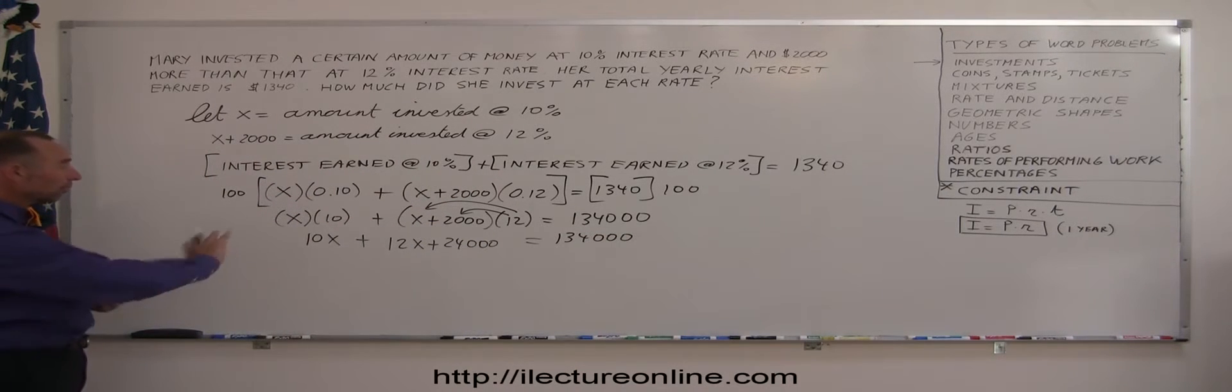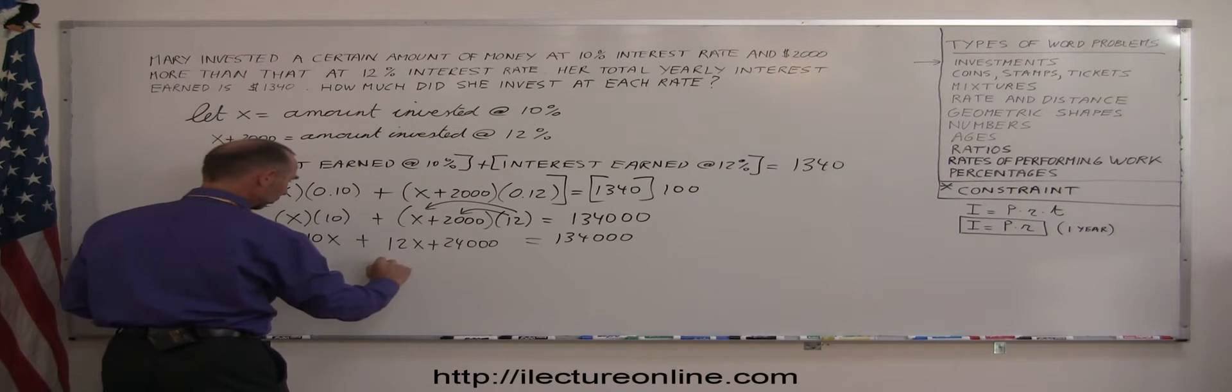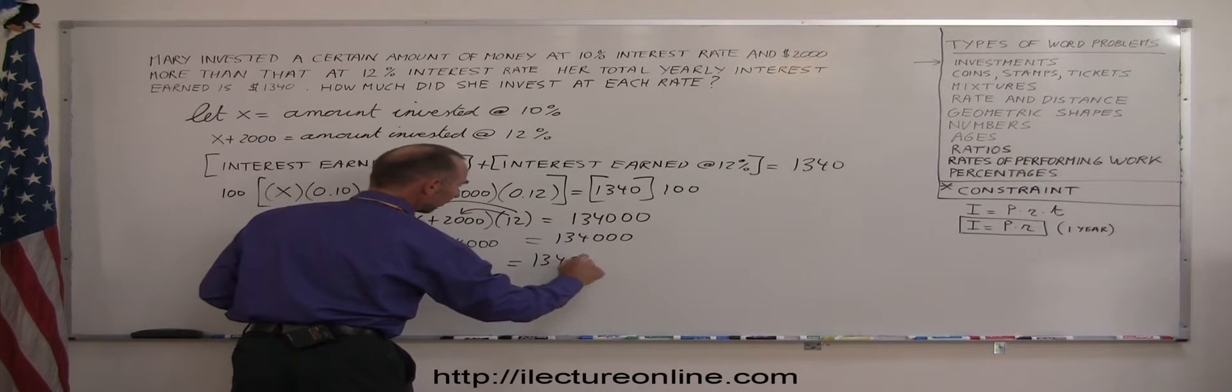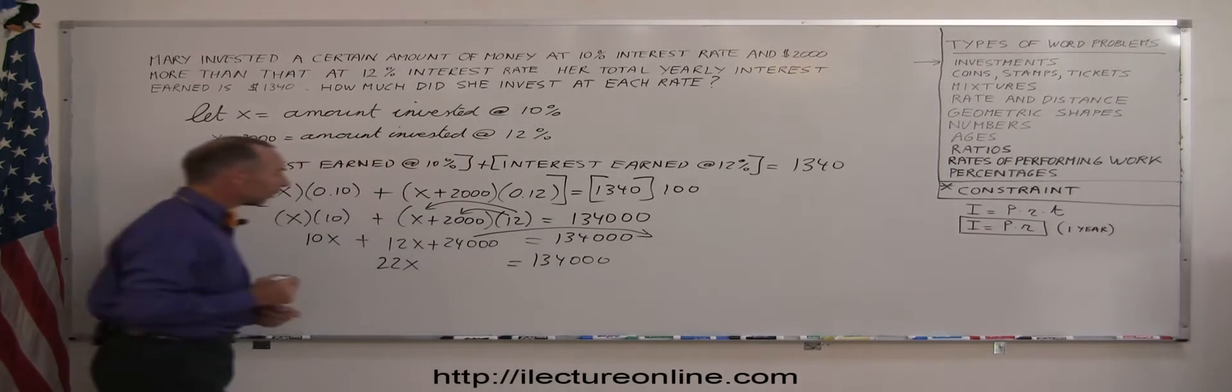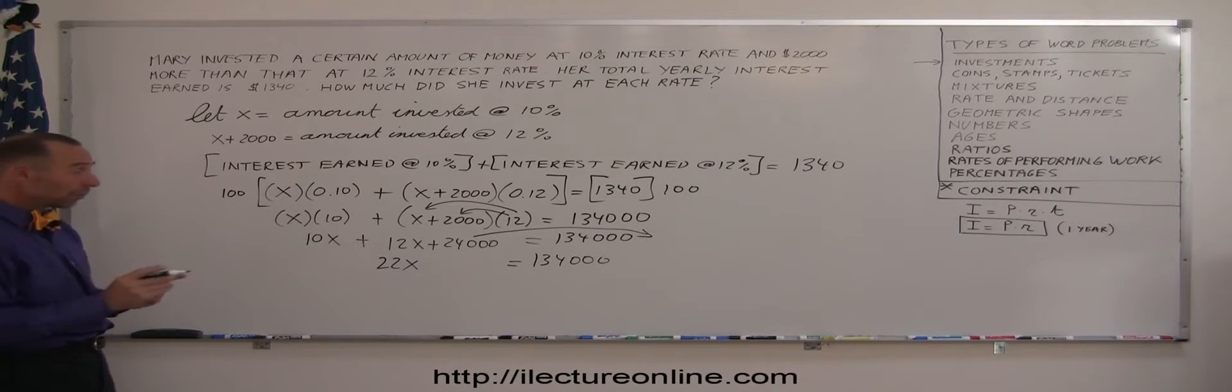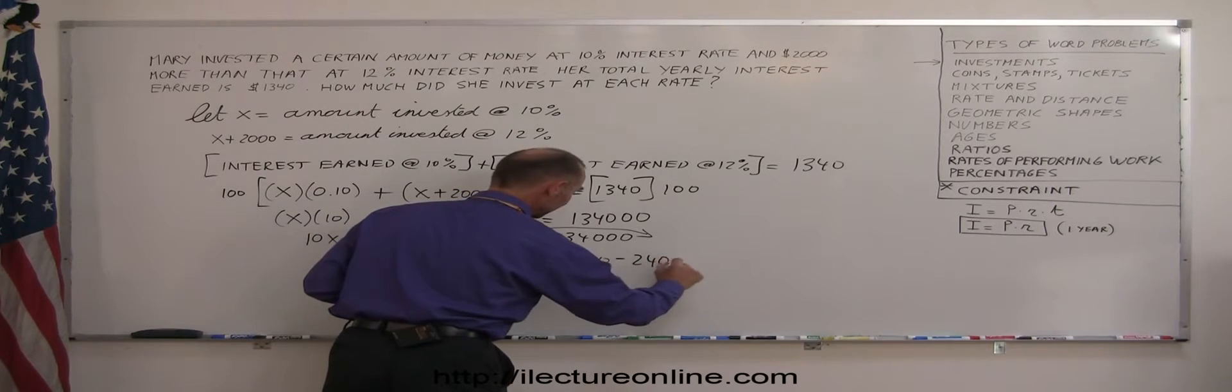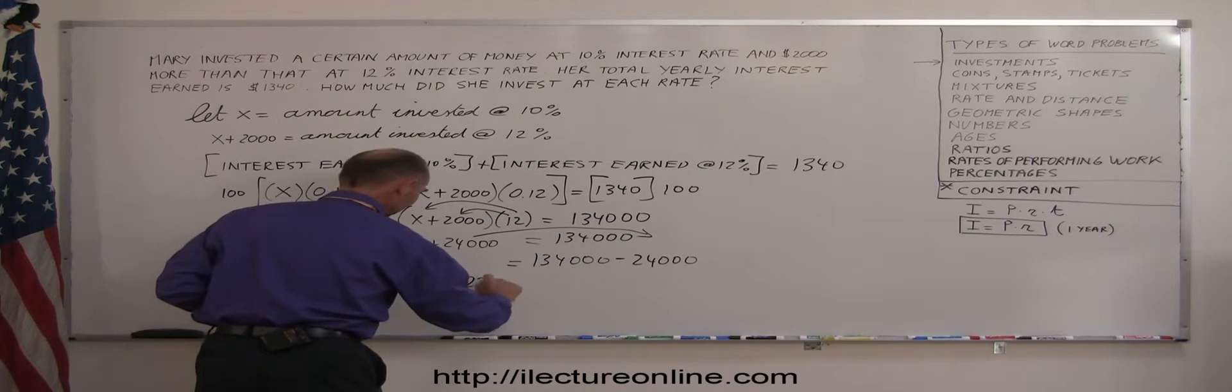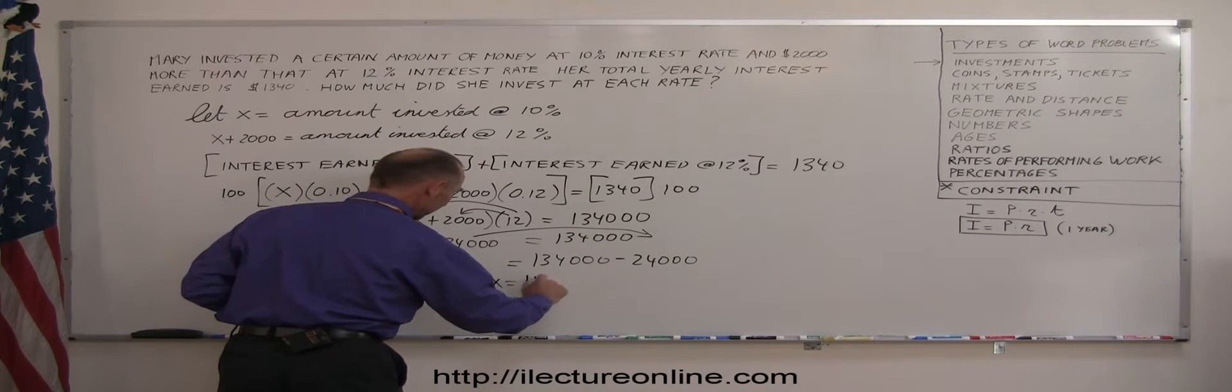The next step is I'm going to move all the numbers to the right side, all the x to the left side. The x is already here, so they stay there. So 10x plus 12x is 22x equals, and on the right side I have 134,000. Then I move the 24,000 to the right side. Remember when I cross the equal sign, I change the sign, that becomes minus 24,000. I combine like terms, so I have 22x equals 134,000 minus 24,000 is 110,000.